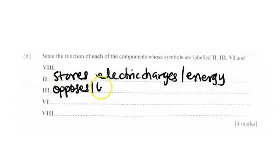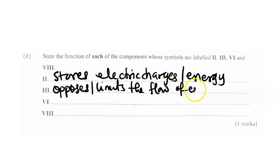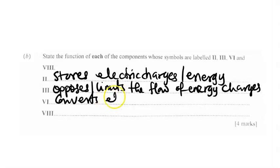The function of a resistor is that it opposes or limits the flow of current in a circuit. VI is an LED — that is a light emitting diode. Its function is that it converts electric current to light, or it indicates the flow of current in a circuit. That is the main function of the LED.